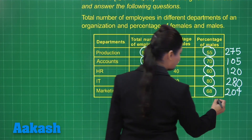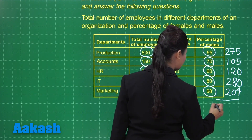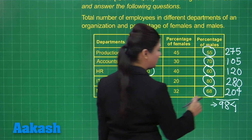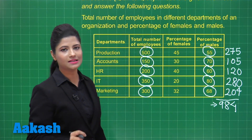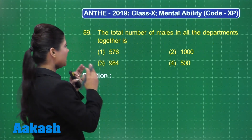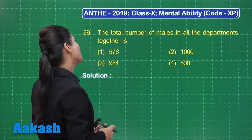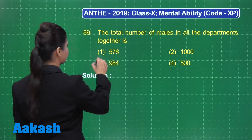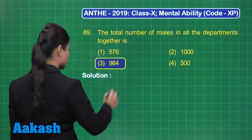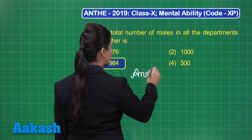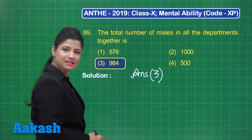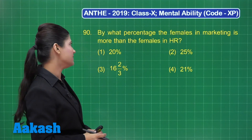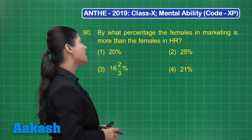Adding all the values: 275 + 105 + 120 + 280 + 204 = 984. So the total number of males across all departments is 984, which is present in option 3. The correct answer for question 89 is option 3.